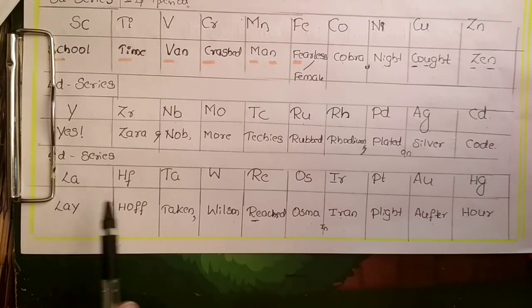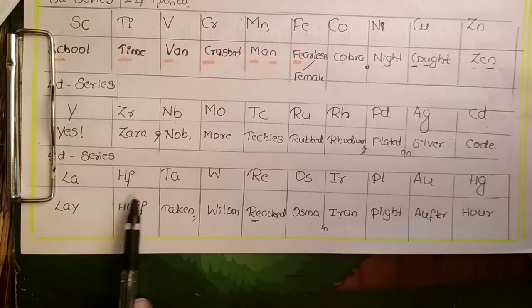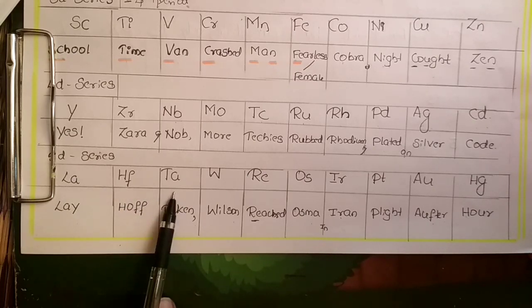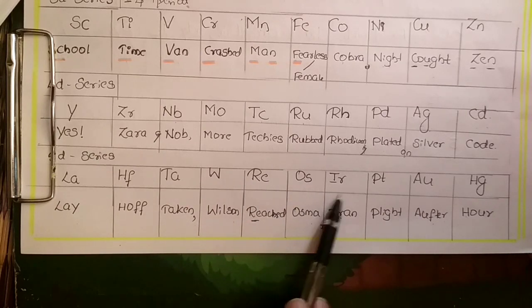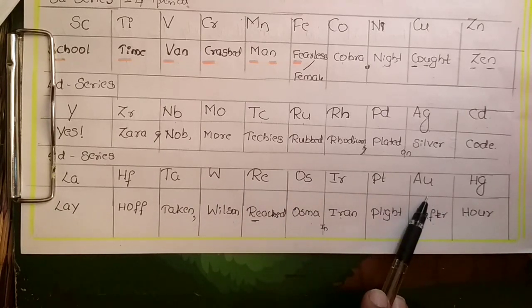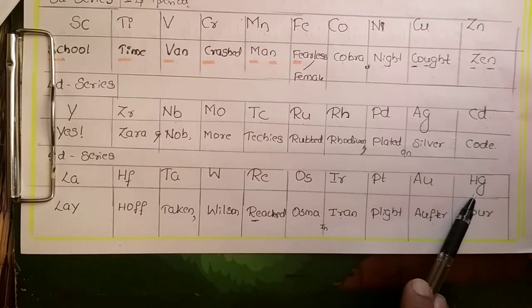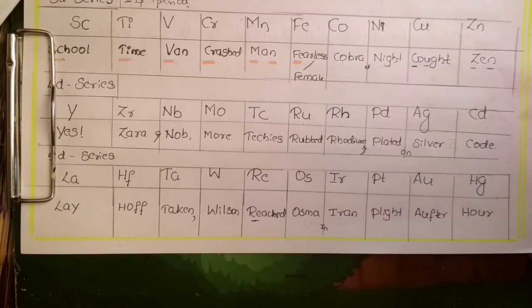The 5d series starts with lanthanum, hafnium, tantalum, tungsten, rhenium, osmium, iridium, platinum, aurum (gold), and mercury. You can remember this as: lay half taken...